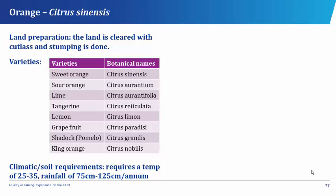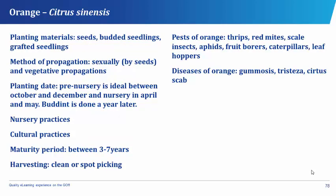The climatic or soil requirement of orange is a temperature of about 25 to 35 degrees centigrade and a rainfall of about 75 centimeters to 125 centimeters per annum. The materials required for planting orange are orange seeds, budded seedlings, and grafted seedlings. The method of propagation is done by seeds sexually and vegetative propagation, for example budding. The pre-nursery is ideal between October and December and the nursery in April and May. Budding should be done a year later.